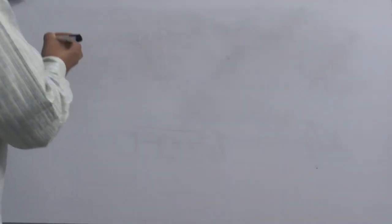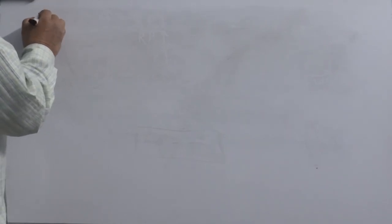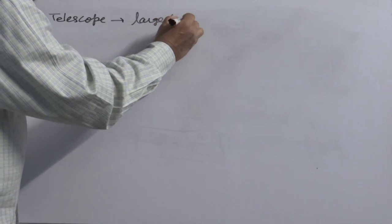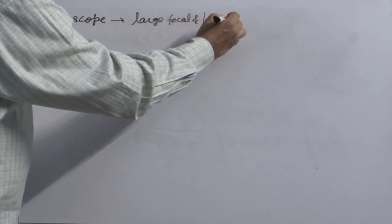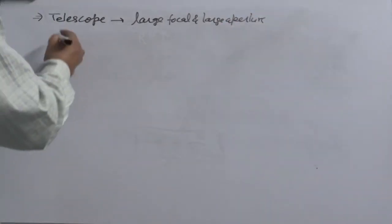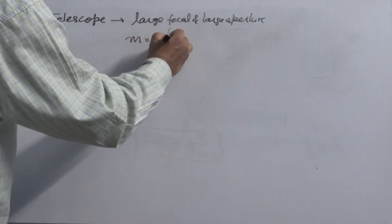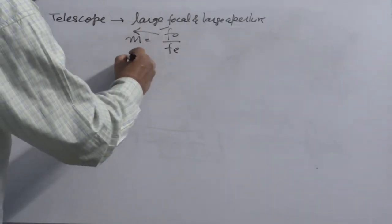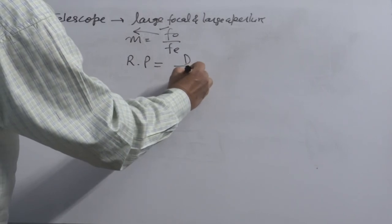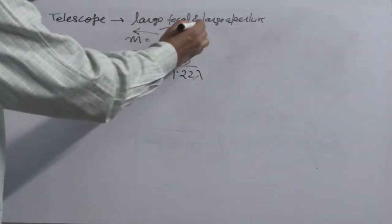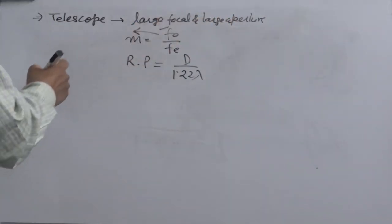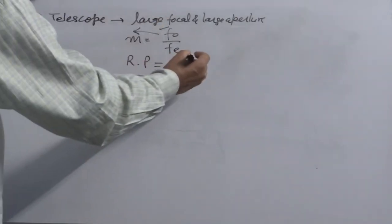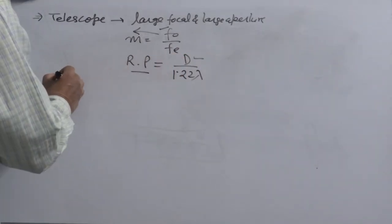Some conceptual questions are commonly asked in optics: why do we prefer an objective lens of large focal length and large aperture in a telescope? Looking at the magnifying power formula M = fo/fe, a larger focal length of the objective increases magnifying power. From the resolving power formula, resolving power is directly proportional to the diameter, i.e., aperture. A larger aperture of the objective lens increases the field of view as well as the resolving power.